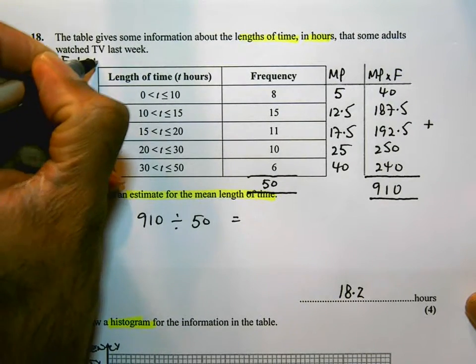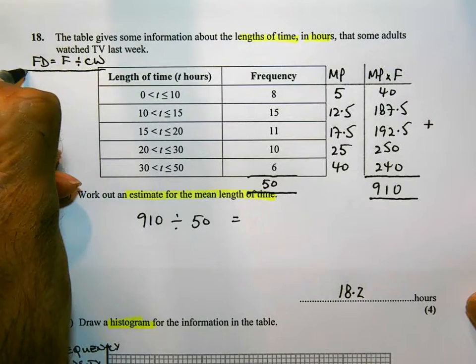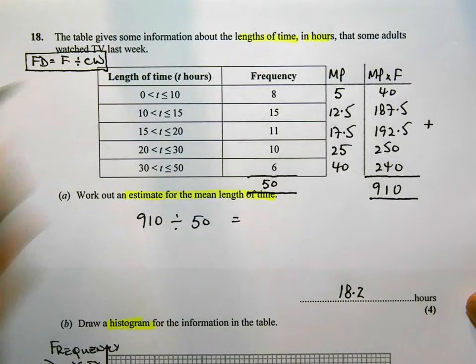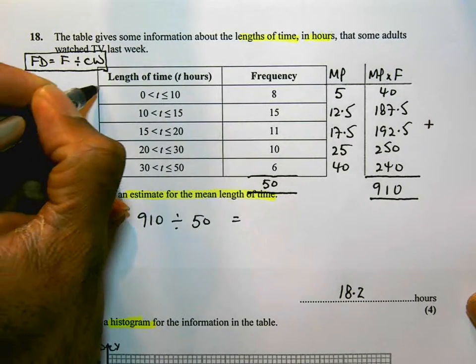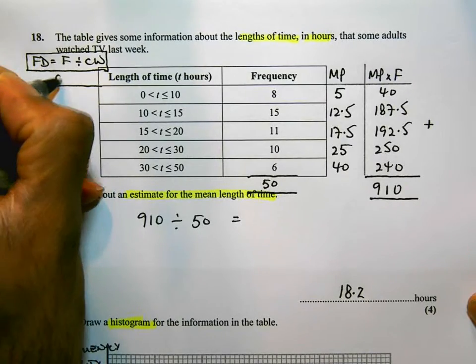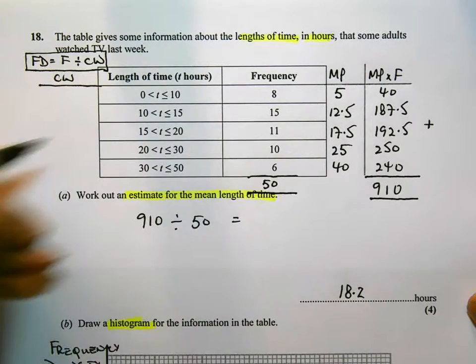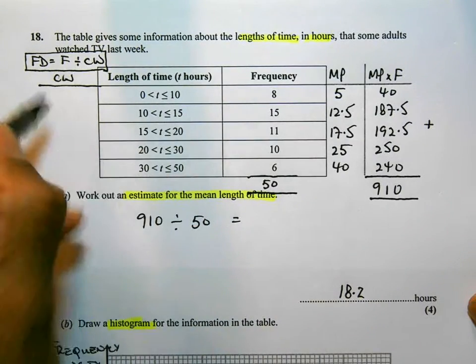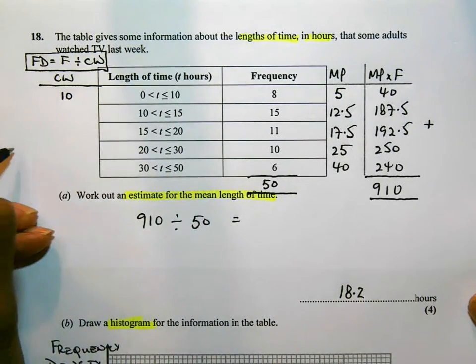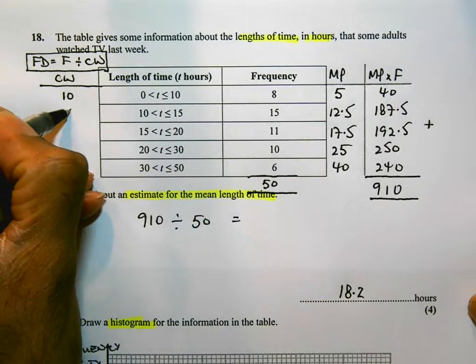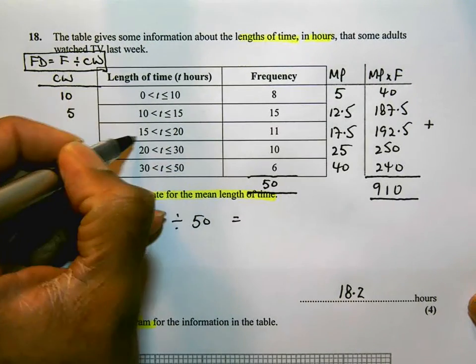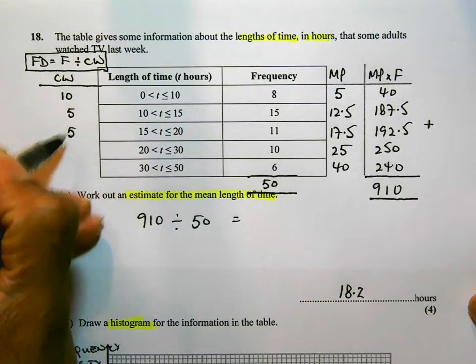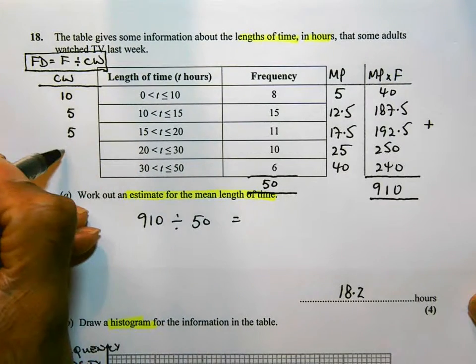So I'm going to go back to the table above and I'm going to identify or work out the frequency density. Now one of the things that you should know about frequency density is frequency density is frequency divided by class width. So the first thing I'm going to do is find the class width of each of these groups. The class width is how big the groups are, so it's effectively the difference between these numbers. The first group is 10, 15 take away 10 is 5, 20 take away 15 is 5, 30 take away 20 is 10, and 50 take away 30 is 20. So those are the class widths of the different groups.